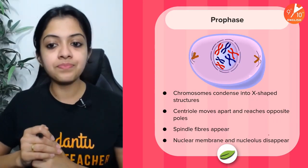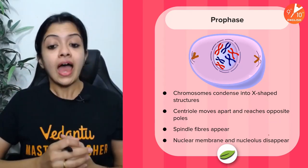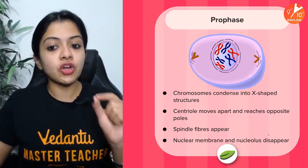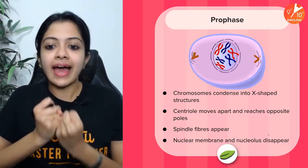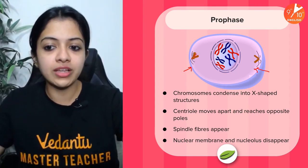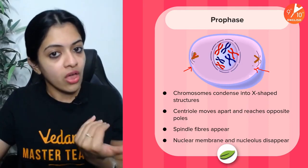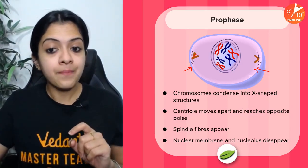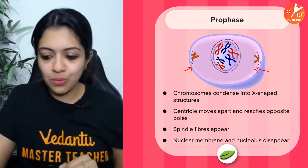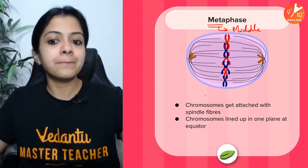Starting with prophase — 'pro' meaning first or preparatory phase. Having gone through G1, S, and G2, the cell enters prophase. The chromosomes condense into X-shaped structures, and the centrioles move apart to reach the opposite poles. Spindle fibers begin to appear, all in preparation for further stages of mitosis. Also remember: the nuclear membrane and nucleolus disappear, as they might obstruct the movement of chromosomes.